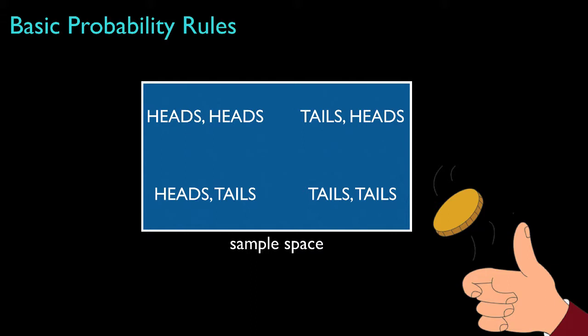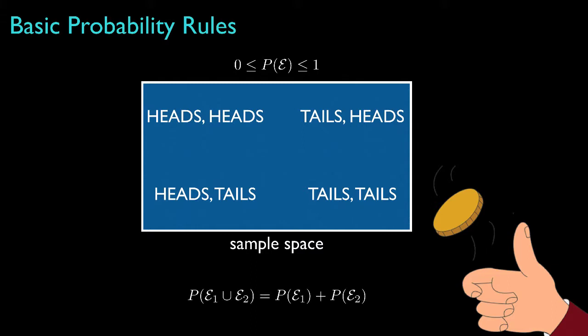To complete the probability model for this example, we'd assign some probabilities to each of the events. For instance, the probability associated with the event of seeing at least one tail is 3/4, or 0.75. The manner in which we assign probabilities for events will depend on the specific example, but in all situations the probability law must satisfy the following conditions. First, the probability for any event must be a number between 0 and 1. And the probability for the union of two disjoint events is equal to the sum of their individual probabilities.